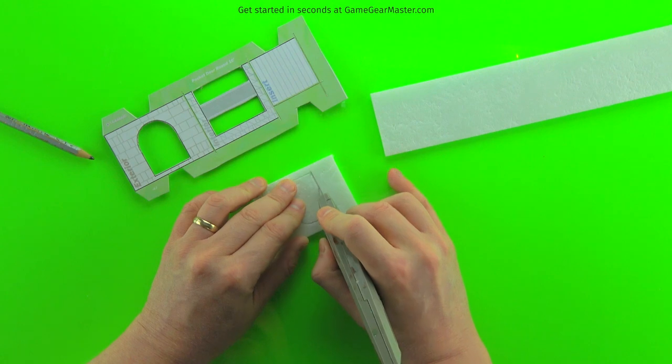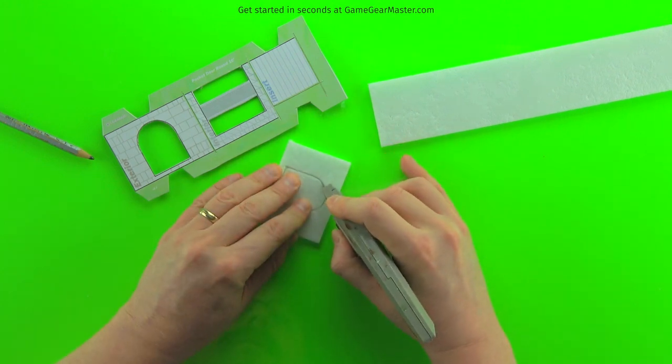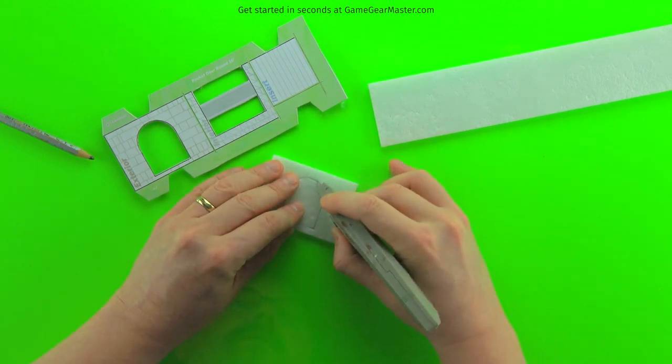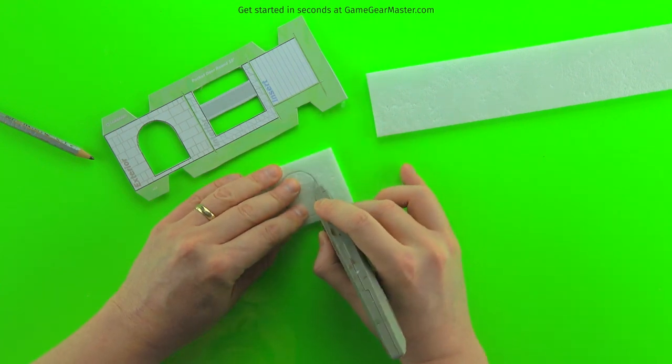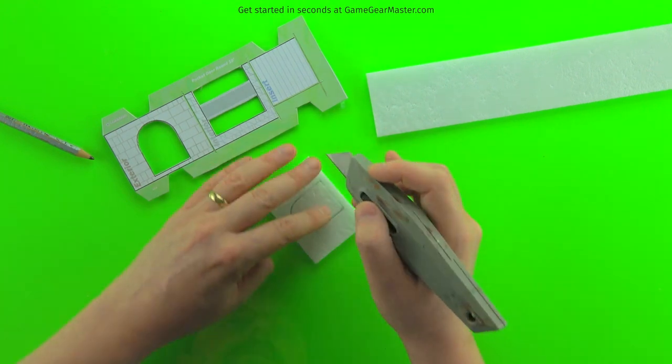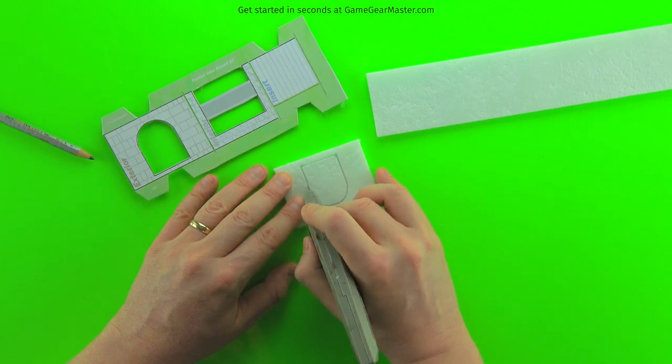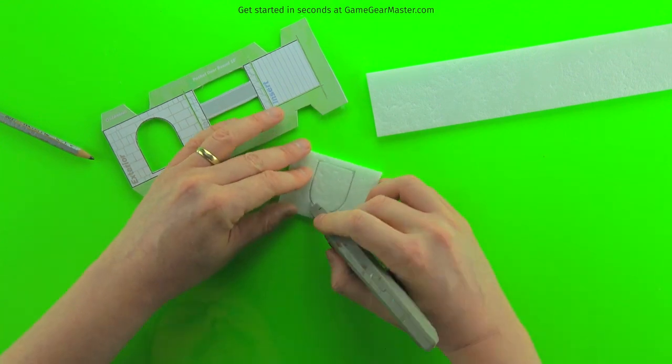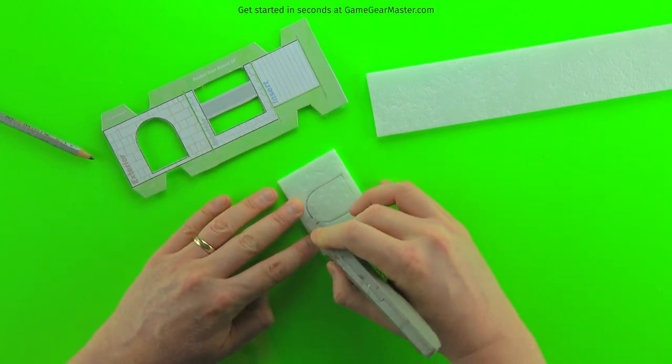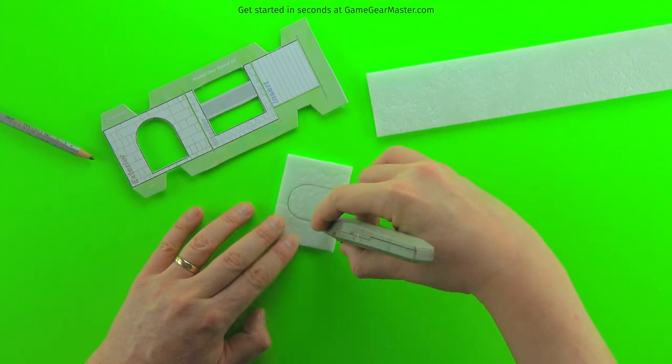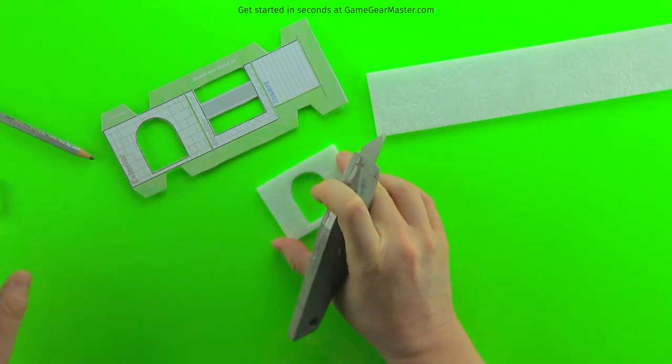And I also do it in more than one pass, because if I try to do it all in one pass, sometimes the foam will tear. So I'll do it halfway down right there, and then I'll do it all the way down on the second pass.